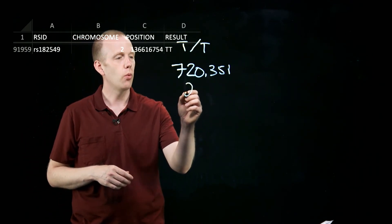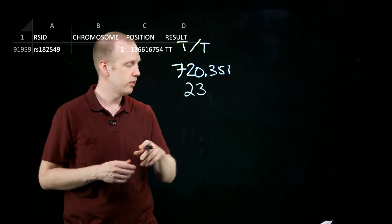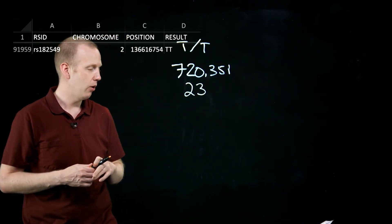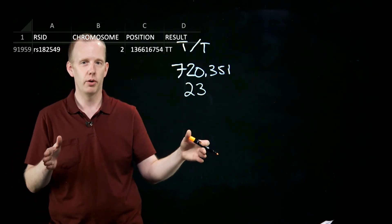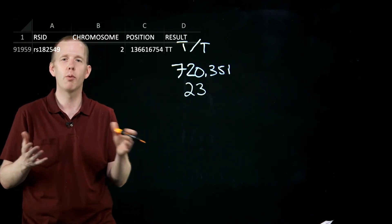this company looked at 720,000 plus SNPs. And if you think about having 23 different chromosomes in humans, that means they're looking at about 31,000 different spots on every one of our chromosomes. It's not quite true because the chromosomes are different sizes.